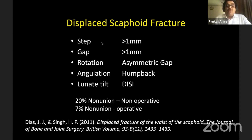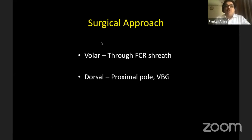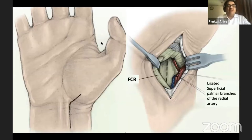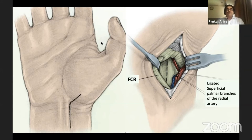An important thing to remember is that with a displaced fracture you have about a 20% non-union rate; however, even when you operate, the non-union rate still continues to be 7%, which is pretty high. The surgical approach is almost always through a volar approach through the FCR sheath. Dorsal approach is reserved only for proximal pole fractures and those requiring vascularized bone graft. The incision goes across the wrist crease onto the thenar eminence, just on the radial side of the FCR sheath.